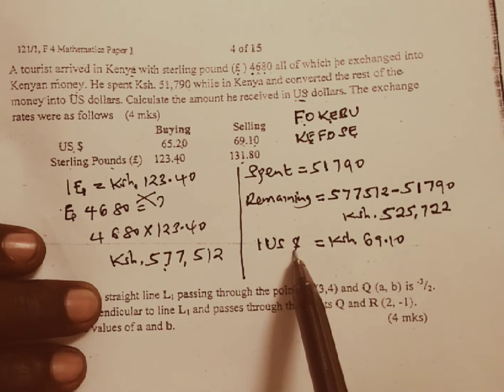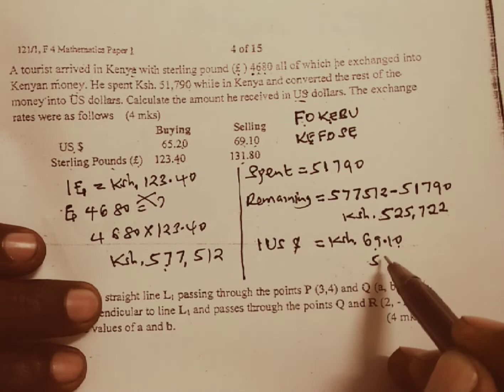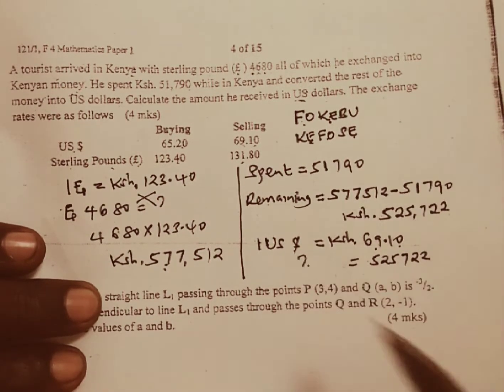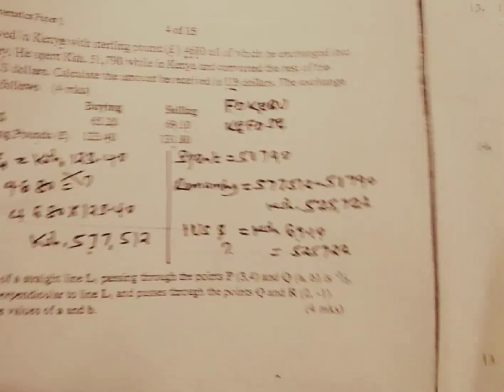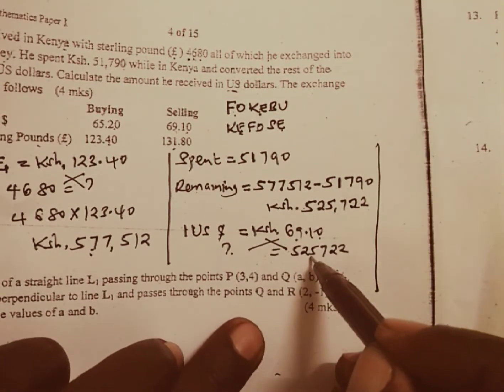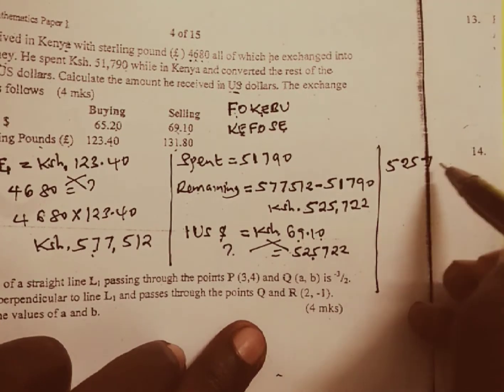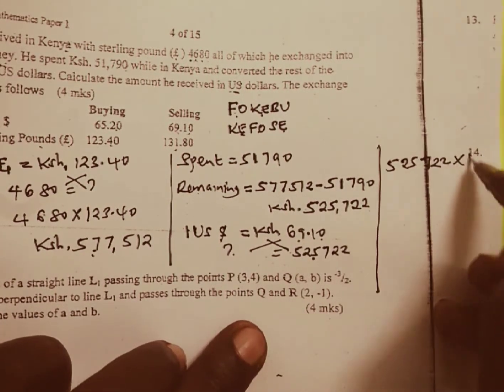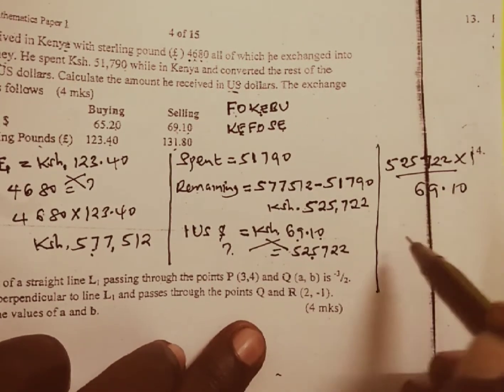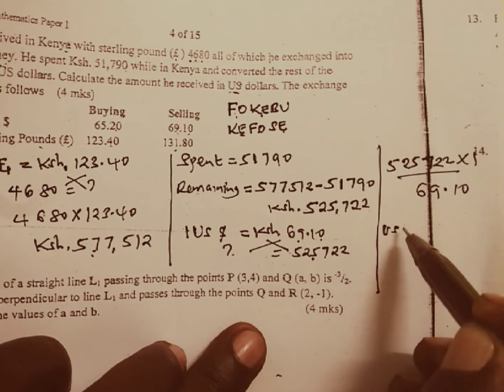So if one US dollar is equivalent to 69 shillings 10 cents, what about 525,722 would be equal to how many US dollars? In this case we are going to cross multiply. That is 525,722, we multiply by one, we divide by 69.10 cents. And this one is going to be equal to how much in US dollars?